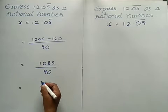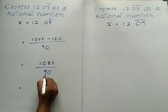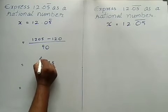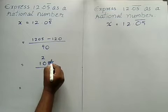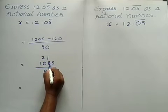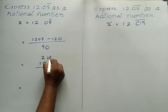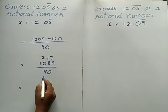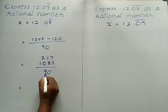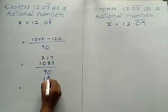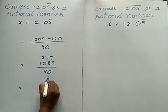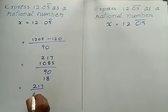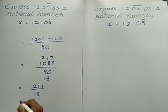We can simplify 1085/90 by cancelling — using the 5 table: 1085 ÷ 5 = 217, and 90 ÷ 5 = 18. So the answer is 217/18. For the other example with 2 digits having the bar: write all the digits, minus the digits not having the bar — that is 192. Divided by: two digits have the bar so two 9's, and after the decimal no digit without bar, so no zero needed.